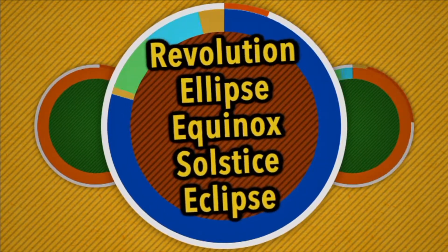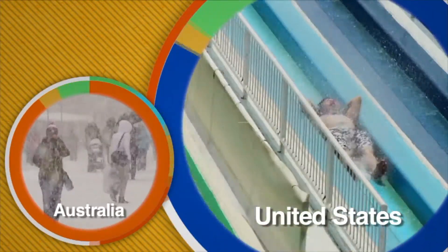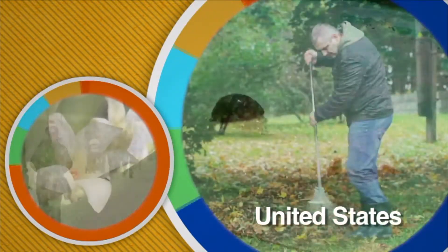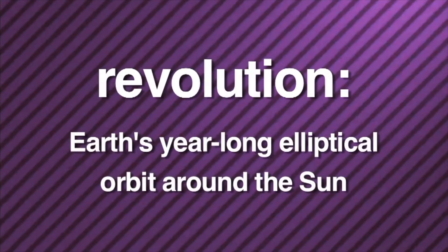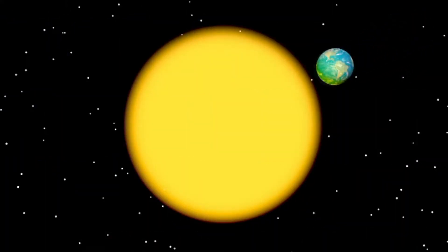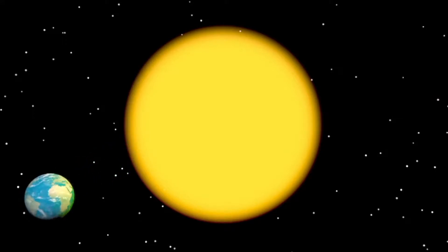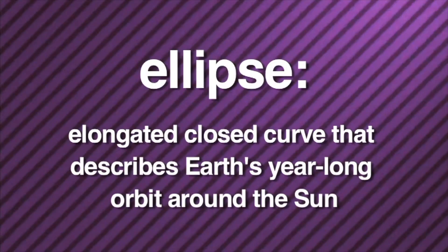Revolution, ellipse, equinox, solstice, and eclipse. Did you know that different countries experience different temperatures at the same time? When it's summer in the United States, it's winter in Australia. And when it's fall in the United States, it's spring in Brazil. This happens because of the revolution of the Earth. Revolution is the Earth's year-long elliptical orbit around the sun. The Earth revolves around the sun in an oval-shaped path. This slightly oval path is referred to as an ellipse — the elongated closed curve that describes Earth's year-long orbit around the sun.